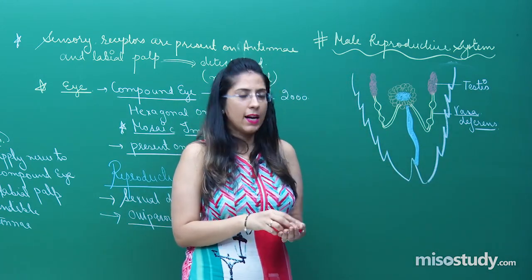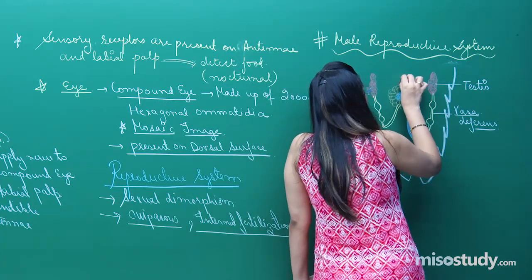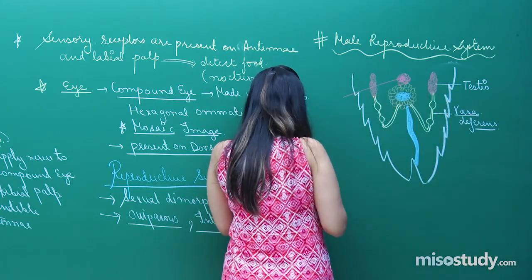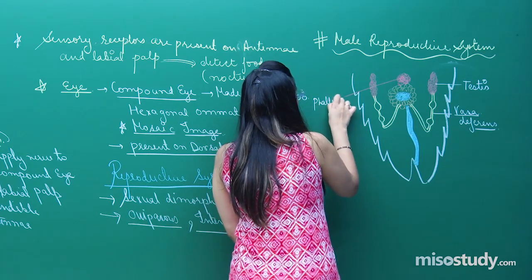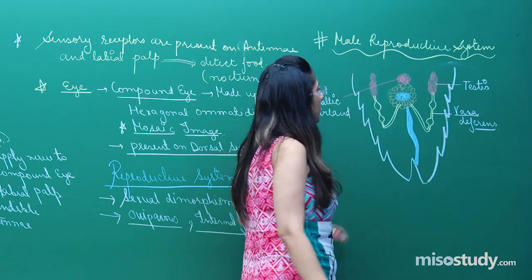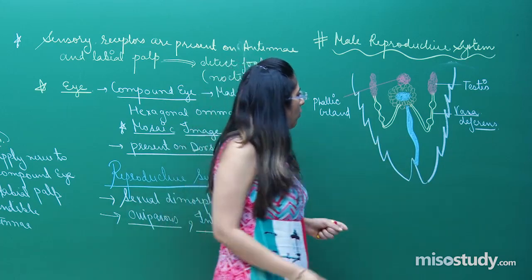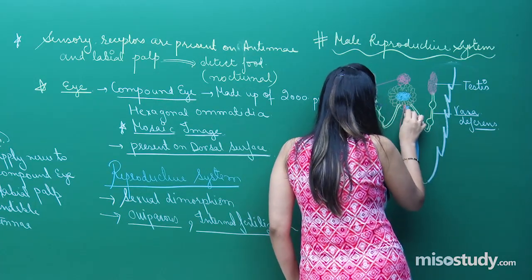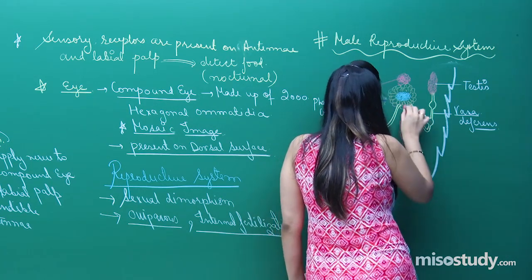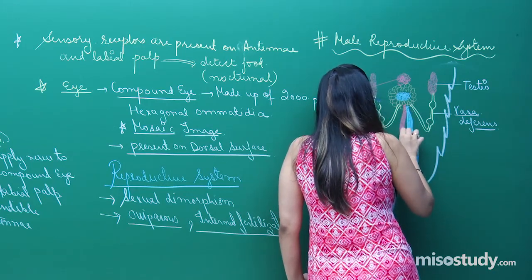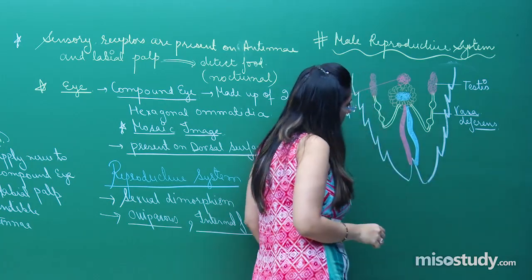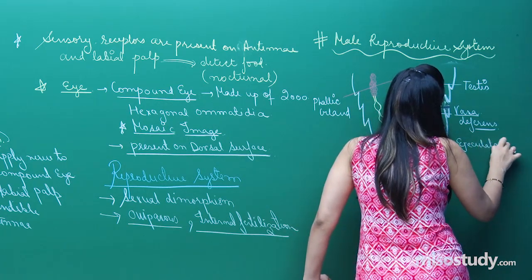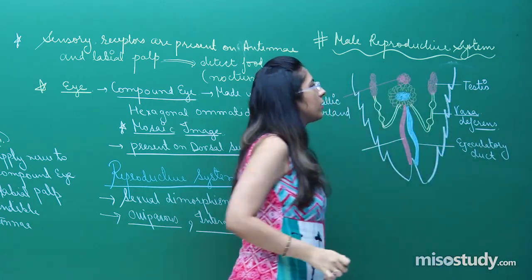One more gland is present — the phallic gland. The phallic gland also has a duct that connects to the ejaculatory duct region.